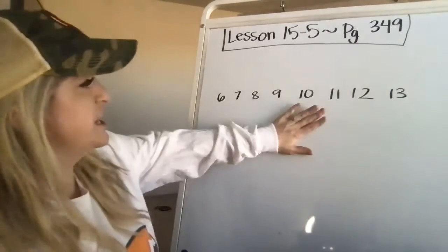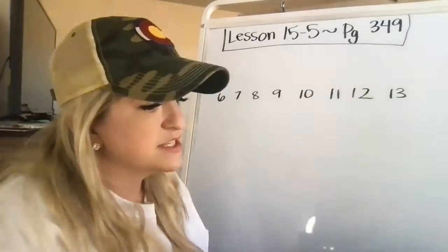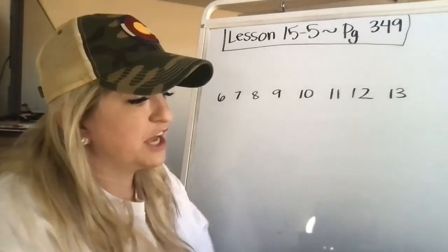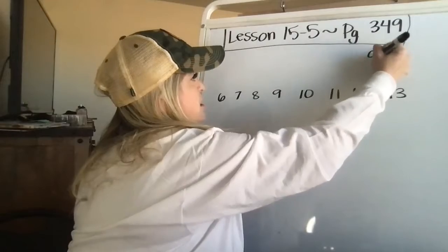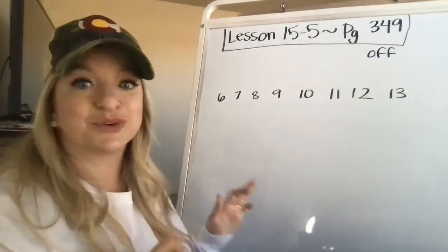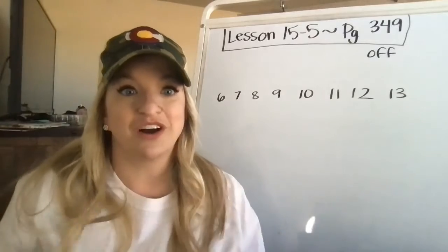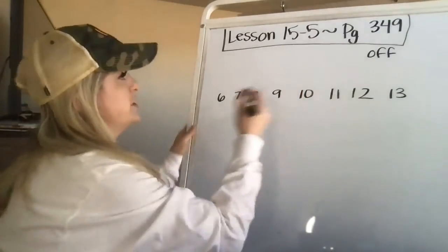I'm on page 349 and the problem says there are 13 people on the bus. Seven people get off. How many people are on the bus? So remember when you have things like off or leave, that means that's a word clue, you're going to subtract. So those are word clues for subtraction. All right, here we go.